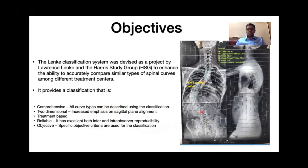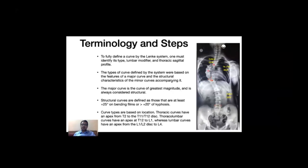The new system was comprehensive because it included almost 42 curve types. It was two-dimensional, so they used to define the triple major thoracolumbar lumbar curves which were not defined separately in King's classification. It was treatment-based because they came out with an algorithm which recommended treatment based upon the nature of the curve. It was reliable because there was good intra- and inter-observer reproducibility, and it was set upon specific arbitrary criteria so there could be uniform guidelines in managing these curves.